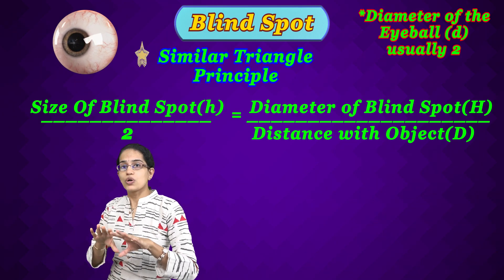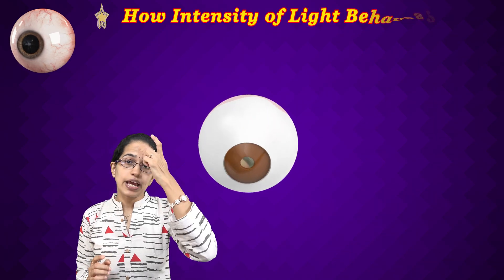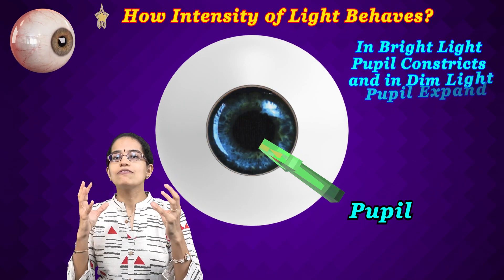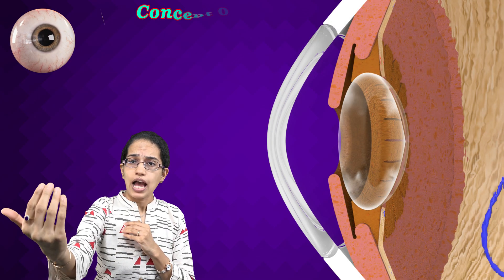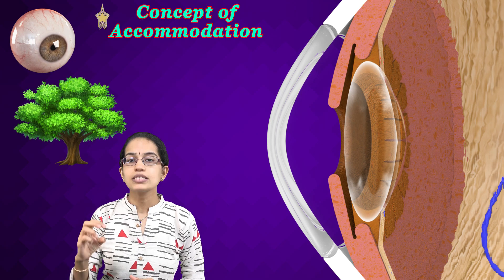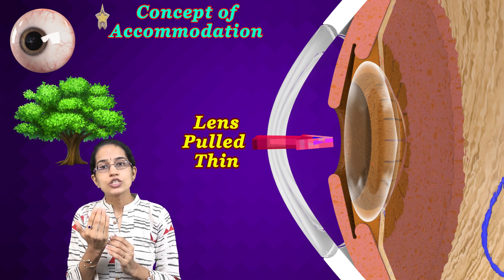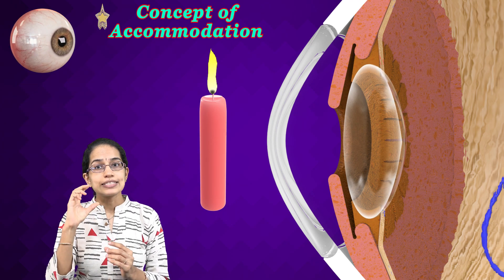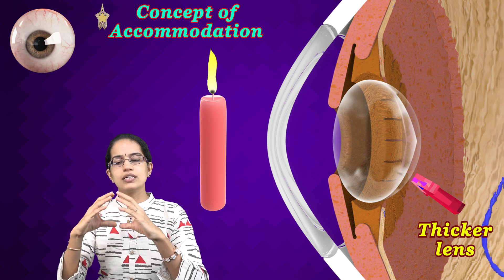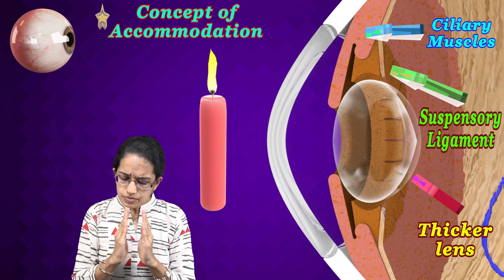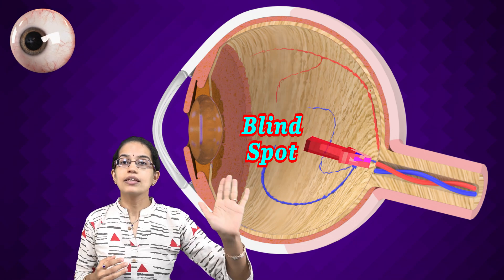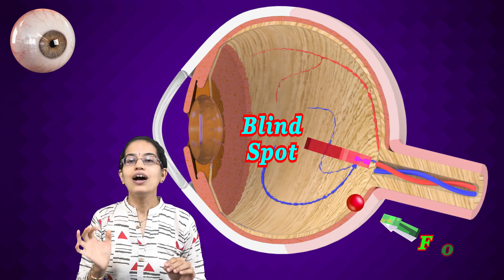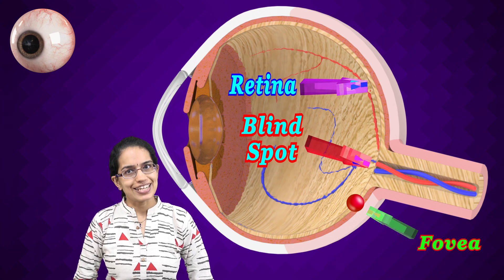In summary, the key concepts covered are: first, intensity of light — in bright light the pupil constricts, in dim light it expands; second, accommodation — the lens becomes thin for far objects and thicker for near objects, due to changes in the suspensory ligaments and ciliary muscles; third, the blind spot — where image is lost; the fovea — where the brightest image forms; and the retina — where actual image formation takes place.